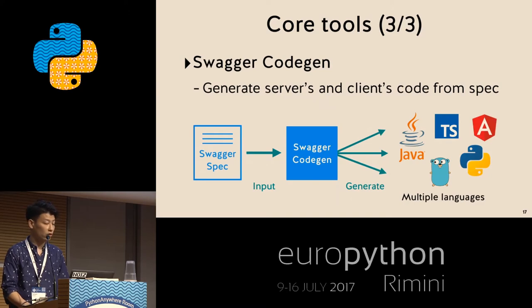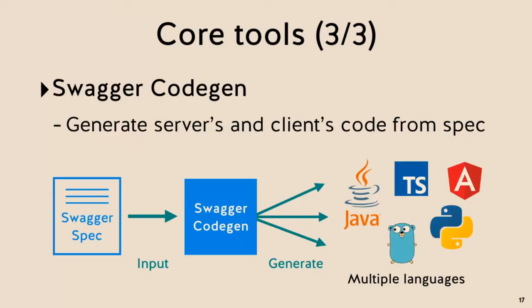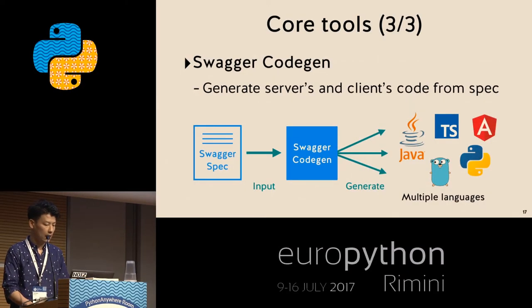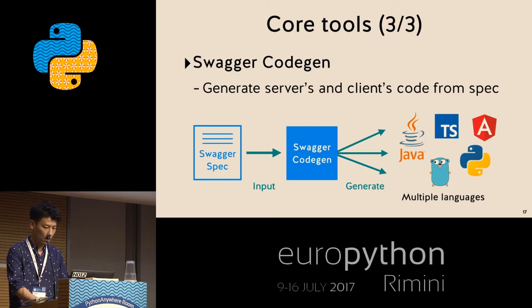Next is Swagger Codegen, which provides the function to generate server stubs and client SDKs from your API spec. Once you write your API spec with OpenAPI and give it to Swagger Codegen, you can generate code in multiple languages including Java, TypeScript, Go, Python, Ruby, C++, and many others. For some languages, both server-side and client-side code can be generated. It's very useful and powerful.